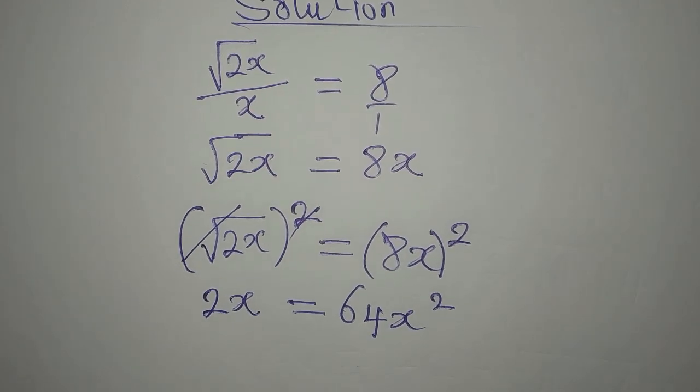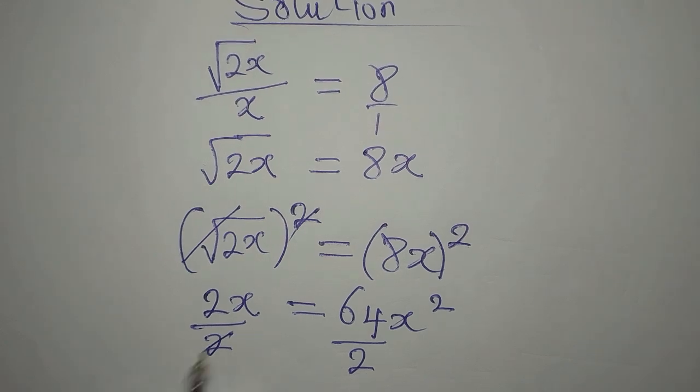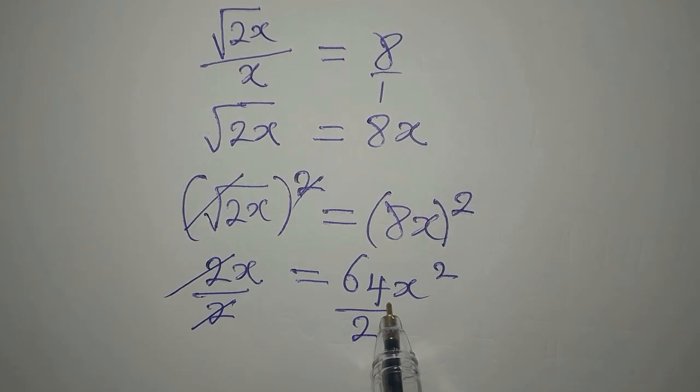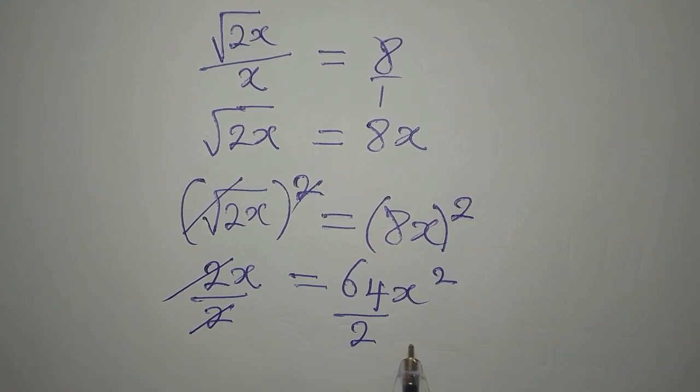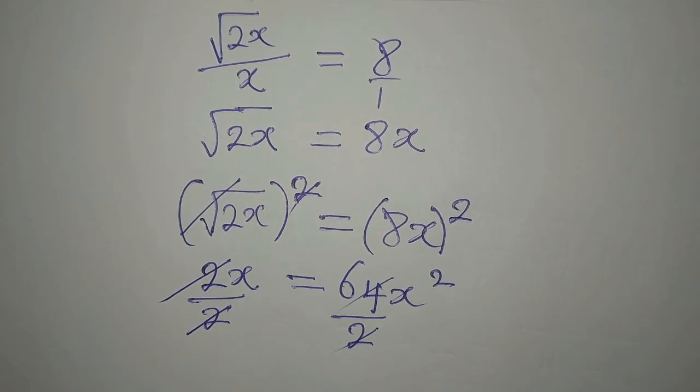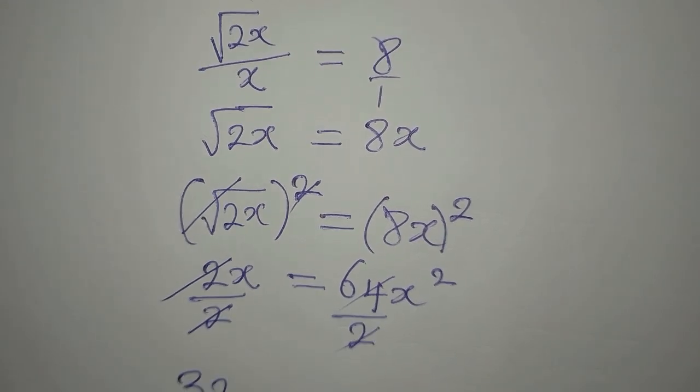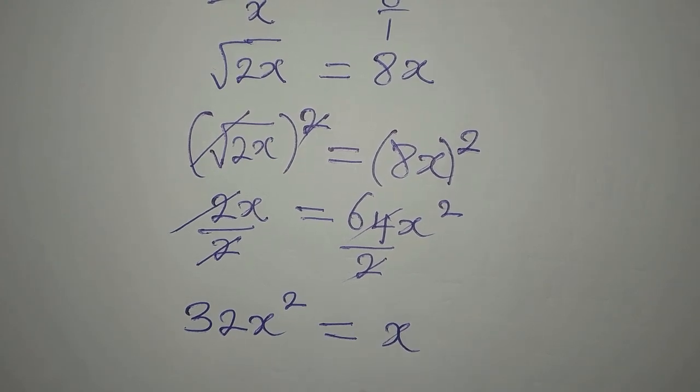And if I want, I can divide this by 2 and divide this by 2, so that this will go. But normally, we are supposed to write the one with the highest power first, so this will give us 32x squared. So that means I'm going to write 32x squared here, and that will be equal to x.